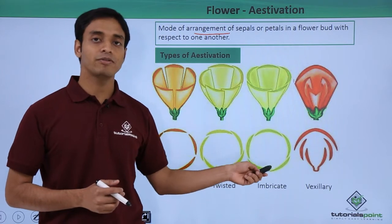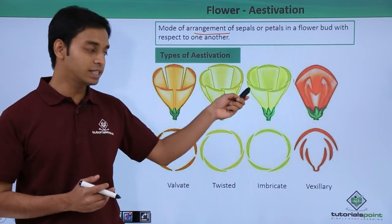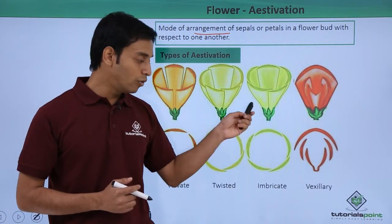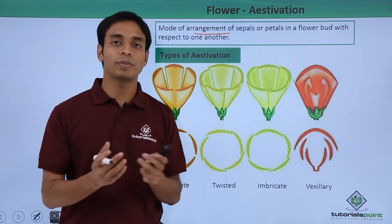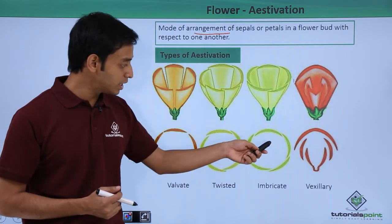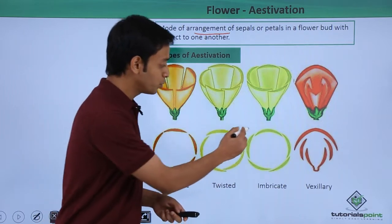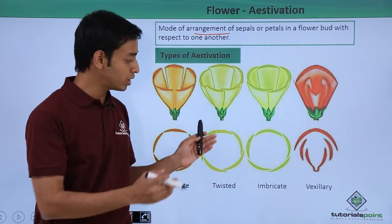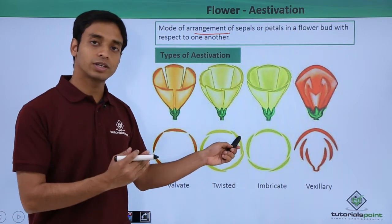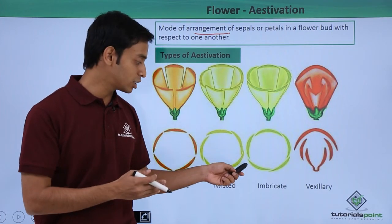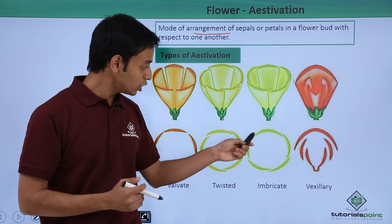The third type is known as the imbricate type of aestivation. Here also we can see overlapping, like in the twisted type, but the difference is that the overlapping does not follow a particular pattern — it is quite random. One petal can be totally inside, with both ends overlapped by adjacent petals.